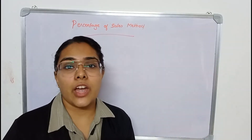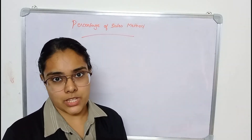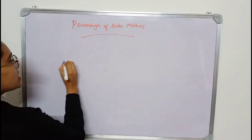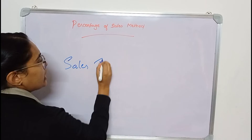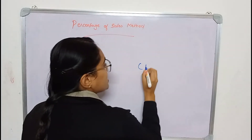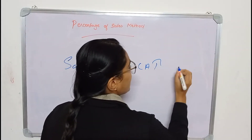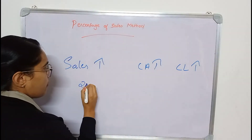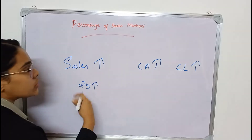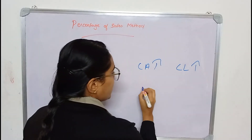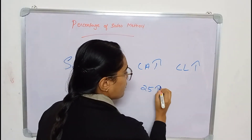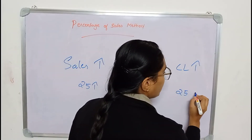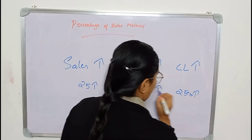This method is indeed the simplest way of estimating working capital. As per this method, when sales increase it will lead to an increase in current assets as well as current liabilities. If sales increase by 25%, that will result in current assets increasing by 25% as well as current liabilities also increasing by 25%.